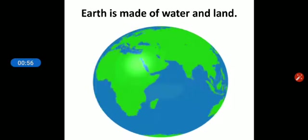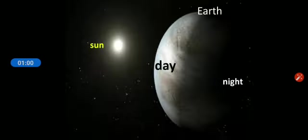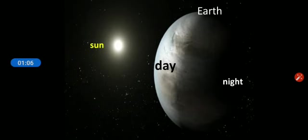It is surrounded by air and sunlight shines on it. Students, Sun gives us heat and light and it can be seen during the day. The side of the Earth facing the sun has day and the side away from the sun has night.